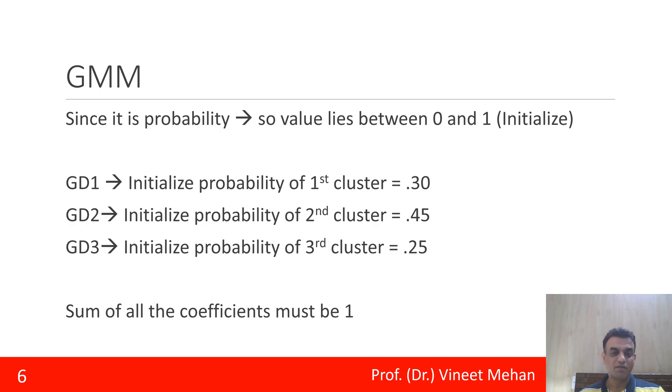So for Gaussian distribution 1 we need to initialize probability of first cluster. Let us say we initialize it to be 0.30. For second cluster we initialized it to be 0.45. For third we initialize it to be 0.25, and sum of all the coefficients must be 1. This is the criteria.